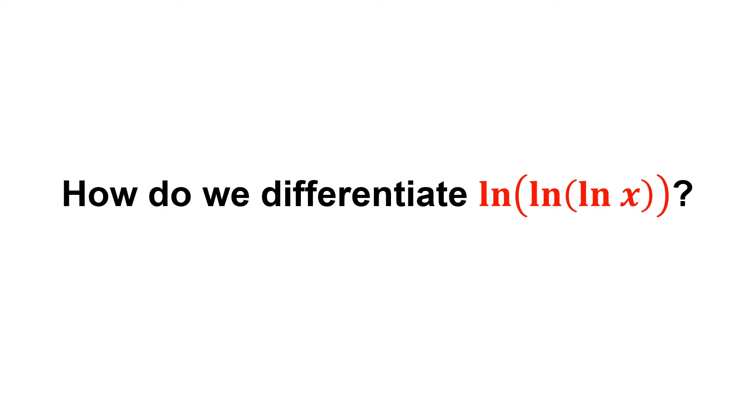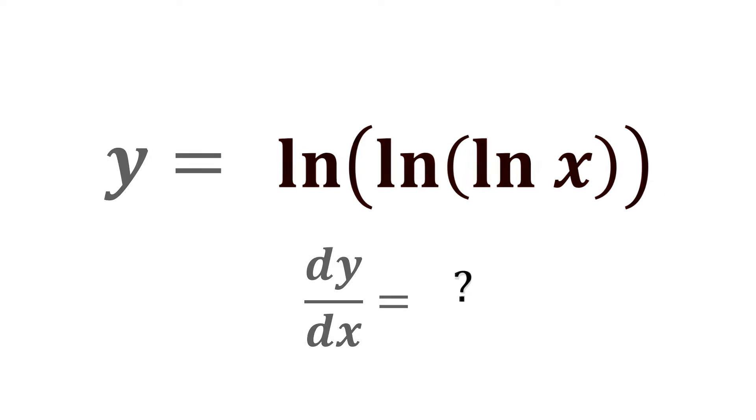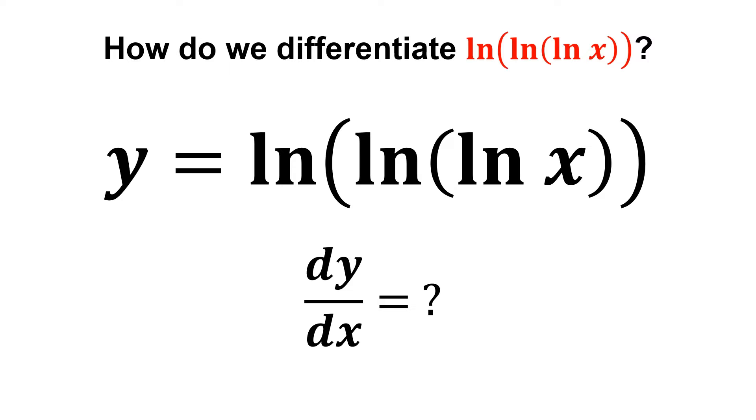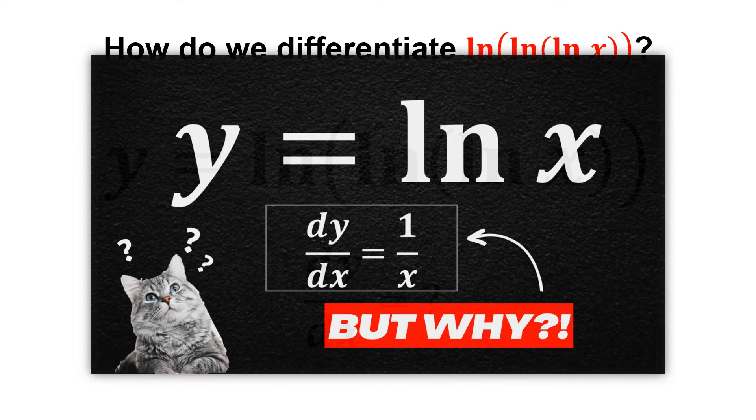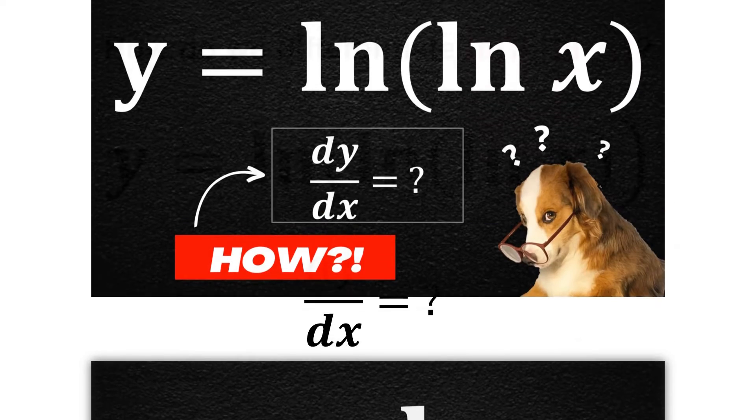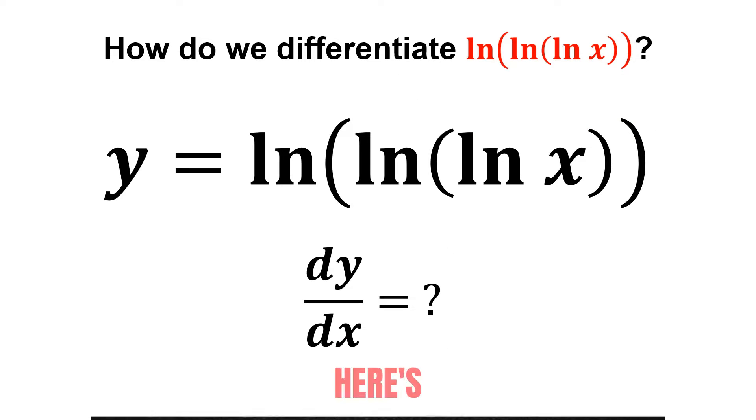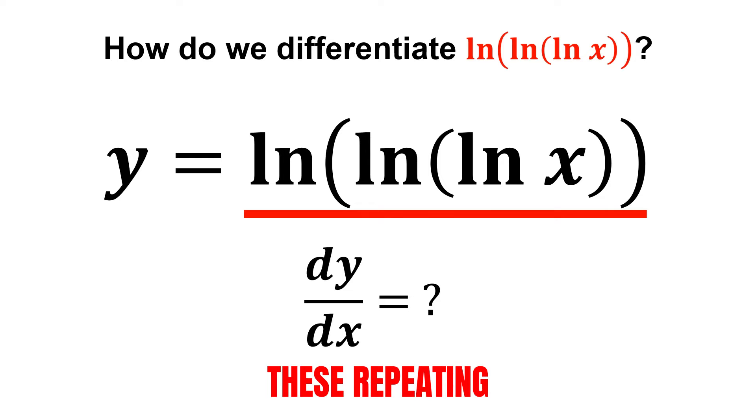How do we differentiate natural log of natural log of natural log of x? In my previous video, we discussed how to take the derivative of ln x, as well as the derivative of ln of ln x. But now, here's the question: What is the derivative of ln of ln of ln x? Don't be afraid by these repeating natural logs. Let us find the solution together.